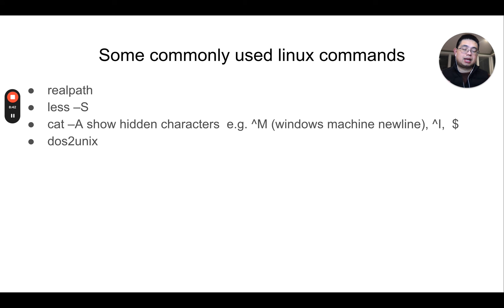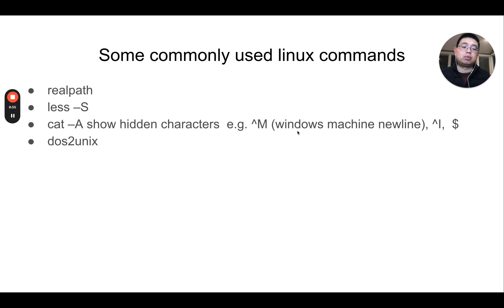less -A shows hidden characters. For example, the ^M character is a Windows-style newline, which is not compatible with Unix. You usually use the dos2unix command or the tr command to remove those. The ^I character is a tab, and the dollar sign marks the end of a line. These are very useful for debugging file formatting issues.